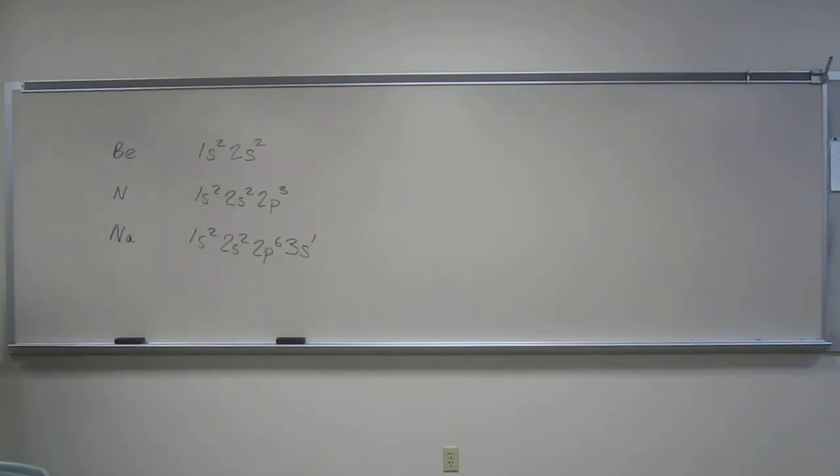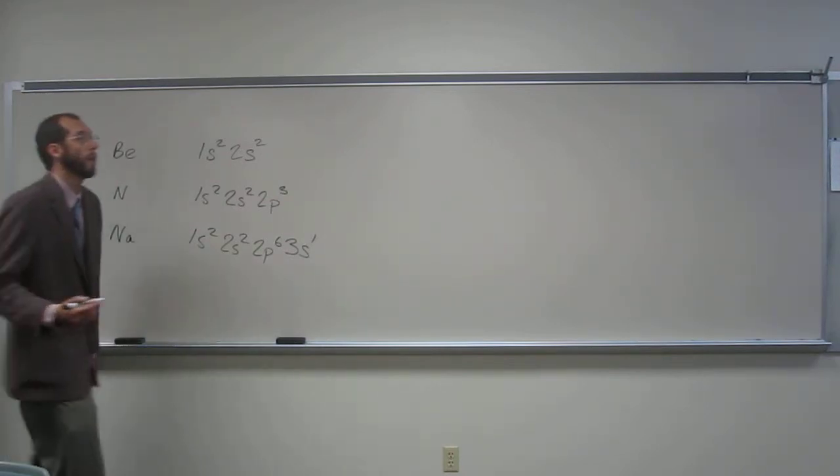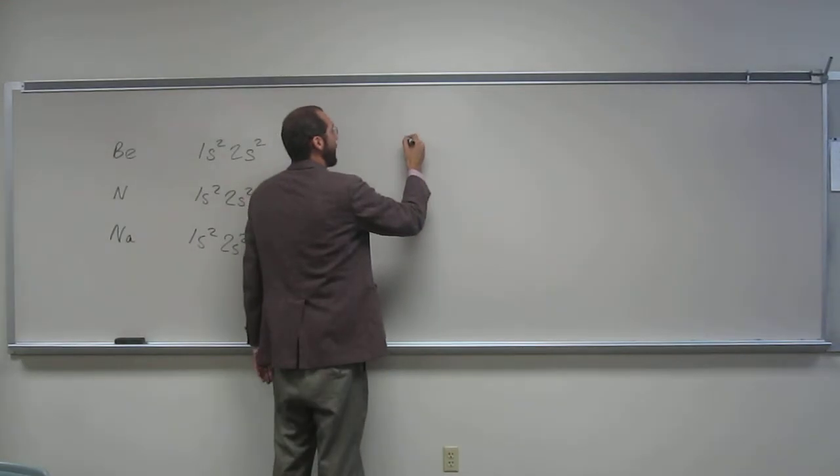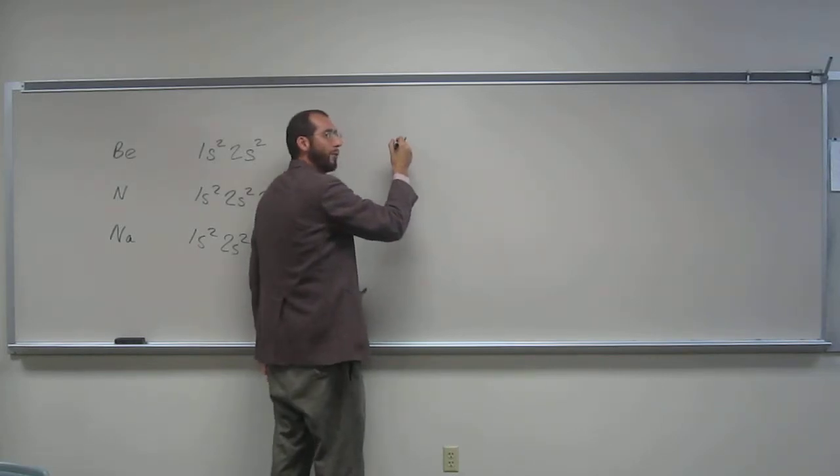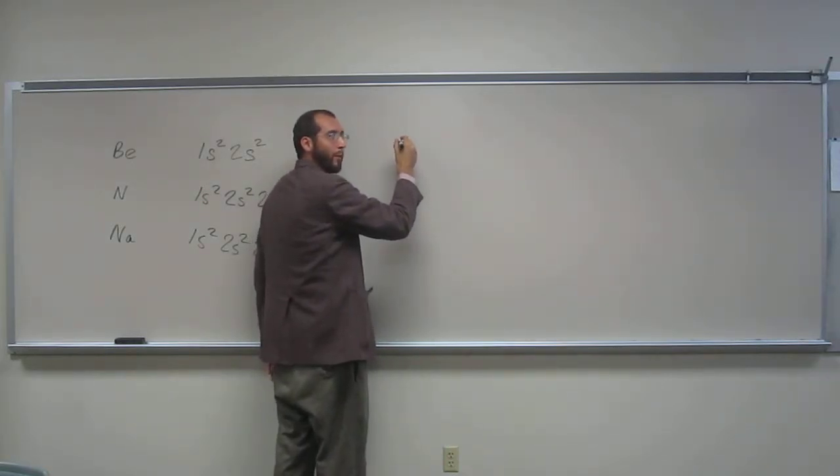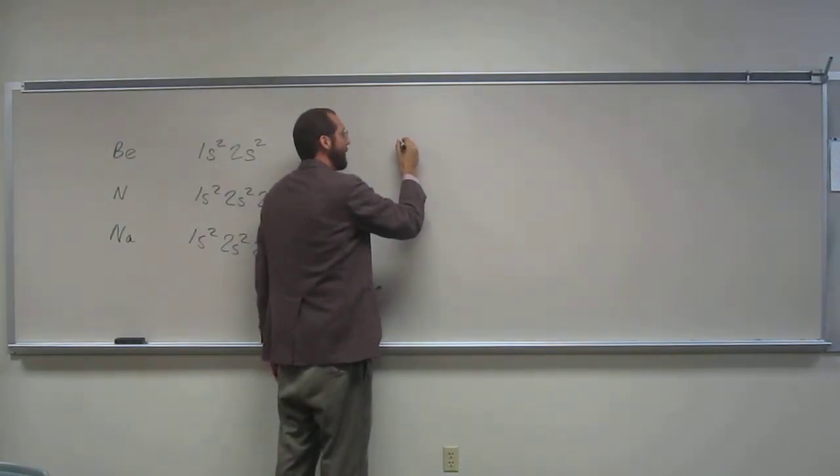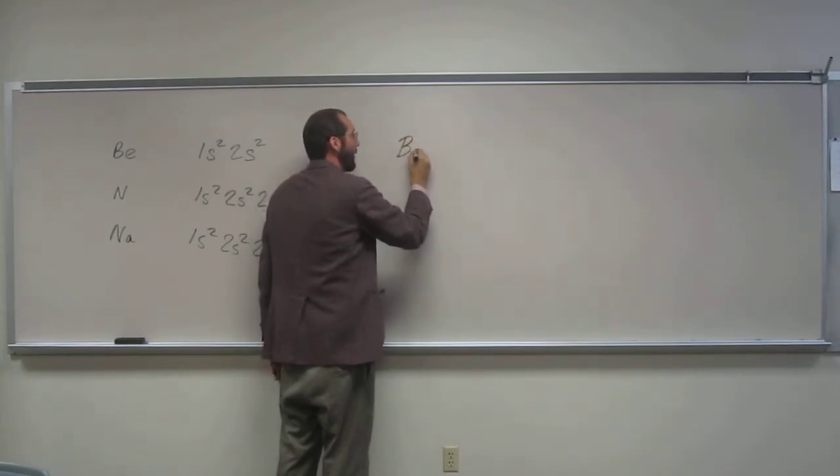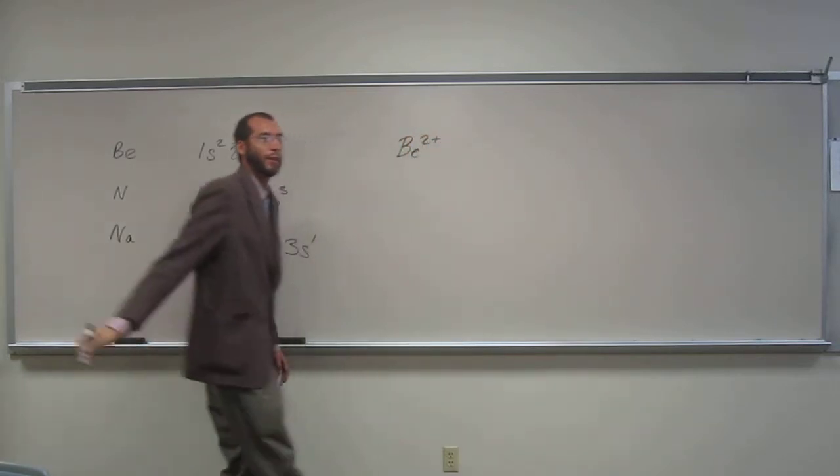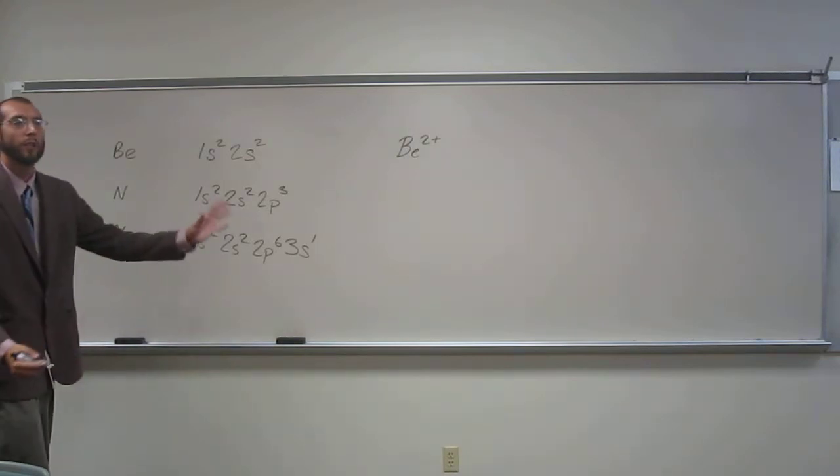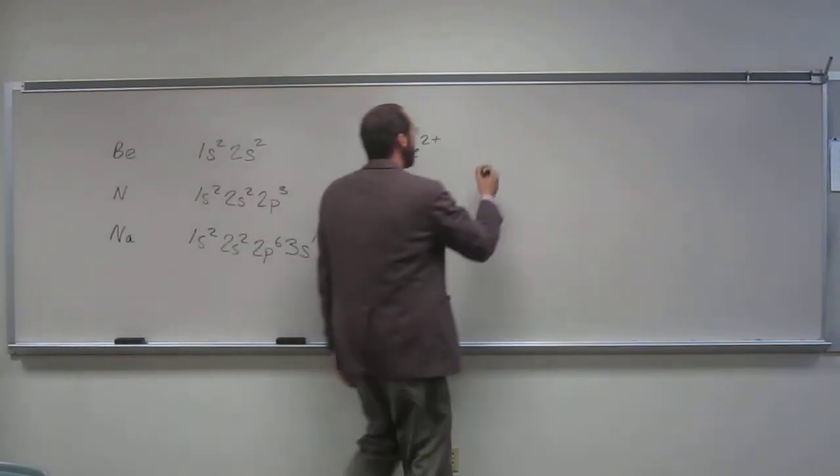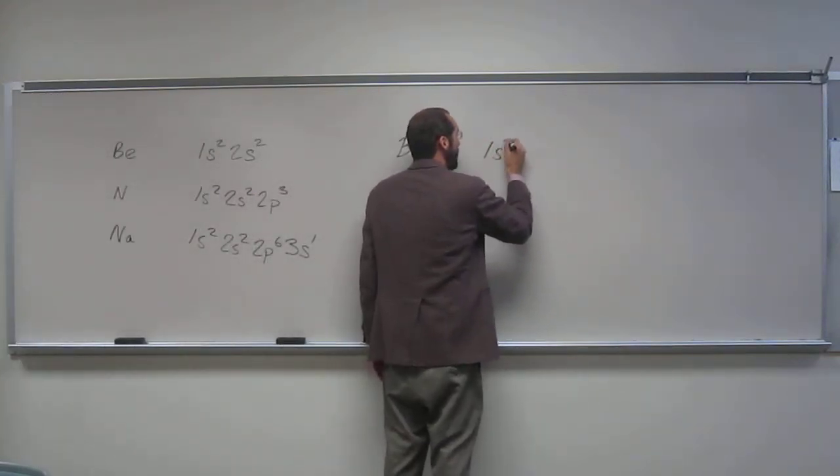The thing that we also know about these is they have common ions, right? What's the common ion for beryllium going to be? What did you expect its ion to be? The ion of beryllium, guys. What is it supposed to be? So beryllium plus 2, right? Be²⁺, okay? So what would be the electron configuration of that? 1s².